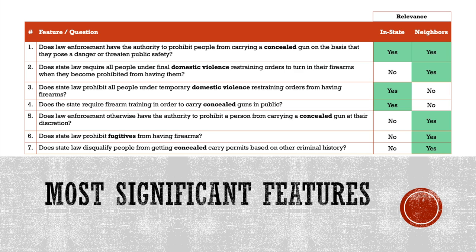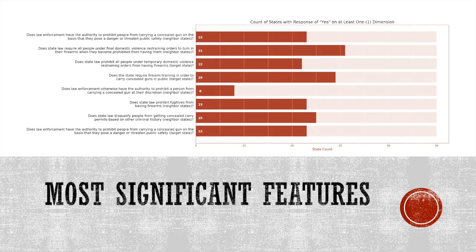Two of the top three questions pertain to those with domestic violence restraining orders, and there is also one question asking whether state law prohibits fugitives from having firearms. It was surprising to find that any state would not have these types of restrictions in place. But fewer than half of the states have any prohibitions on fugitive firearm possession, and in 19 states, individuals prohibited from having firearms due to domestic violence restraining orders are not required to turn in their weapons — and these counts are from 2019.